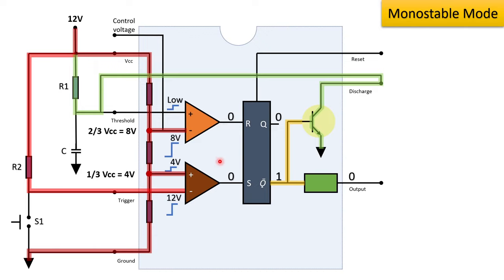When both inputs of the flip-flop are 0, it will not make any change in output — it will reflect its previous state. In order to change the output of IC555, we need to close switch S1. This will ground the negative terminal of the trigger comparator.